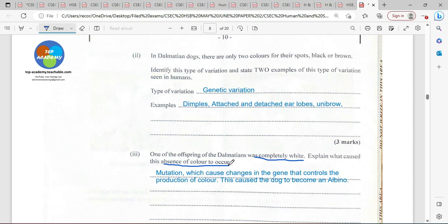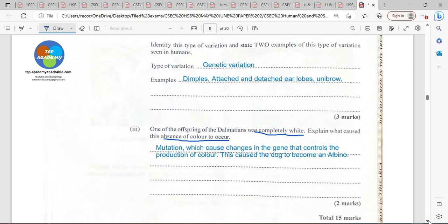Yes, albinos. We have had albino snakes. We have had albino lions. We have had albino humans. We've had albino all different types of animals. So this takes us pretty much to the end of question number two.